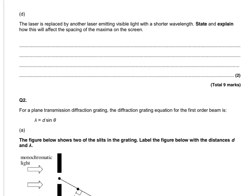And so last thing, the laser is replaced by another laser emitting visible light with a shorter wavelength. So shorter wavelengths are typically blue. So in terms of state and explain how this will affect the spacing, we've got this equation. First, let's look at what stays the same.